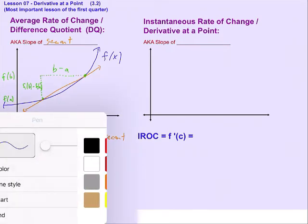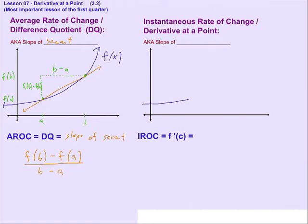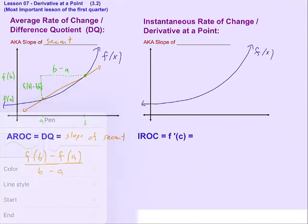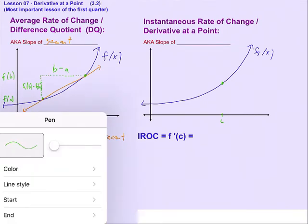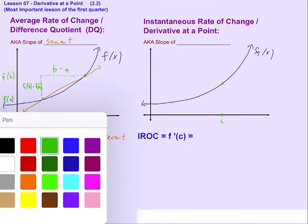But first, let's draw the same thing. We're going to have the same function. We'll label it f of x again. But this time, instead of having two points on the line and talking about the average rate of change connecting the two points, I want to talk about just one point.